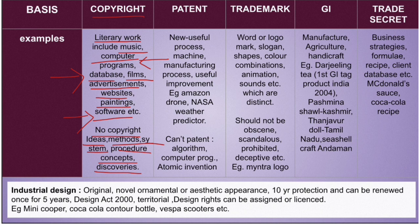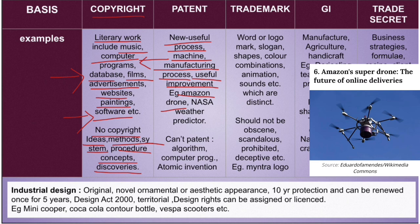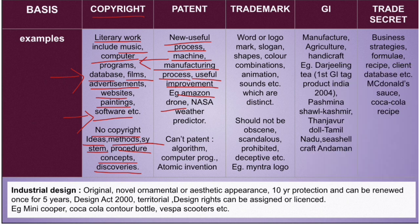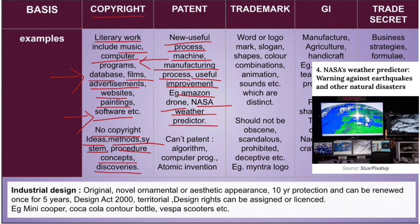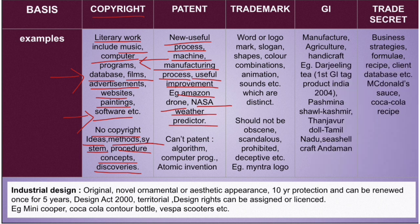Moving ahead to patents. Patents are for new and useful processes, machines, manufacturing processes, and useful improvements. For example, Amazon's drone is under patent, and NASA's weather predictor is also under patent.